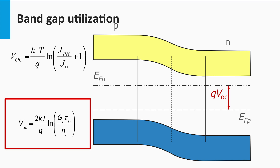As the derivation of this equation is out of the scope of this lecture, we have included it as an exercise in this week's homework. The equation tells us two important aspects of the open-circuit voltage. If we increase the irradiance, or in other words the generation rate of charge carriers, the open-circuit voltage is increased. This is a welcome effect which is utilized in concentrator photovoltaics, which we will discuss later in this course.